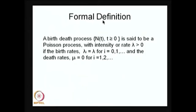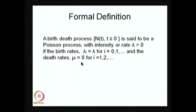A birth-death process N is said to be a Poisson process with intensity or rate λ if the birth rates are constant for all states i and the death rates are zero. That is, it is a special case of a pure birth process with constant birth rates and zero death rates, and this also yields a Poisson process.